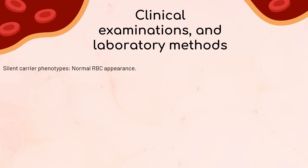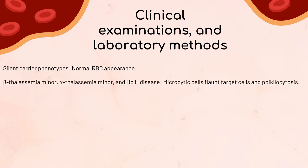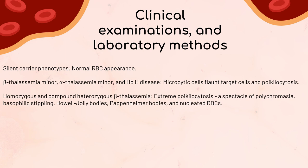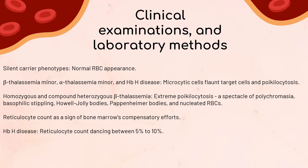The Wright-stained peripheral blood film provides captivating findings. In silent carrier phenotypes, RBCs appear normal, but in beta-thalassemia minor, alpha-thalassemia minor, and hemoglobin H disease, microcytic cells show target cells and poikilocytosis. In homozygous and compound heterozygous beta-thalassemia, extreme poikilocytosis takes center stage, with polychromasia, basophilic stippling, Howell-Jolly bodies, Pappenheimer bodies, and nucleated RBCs. The reticulocyte count reflects bone marrow efforts: hemoglobin H disease shows 5% to 10%, while homozygous beta-thalassemia shows a more subtle 2% to 8%.